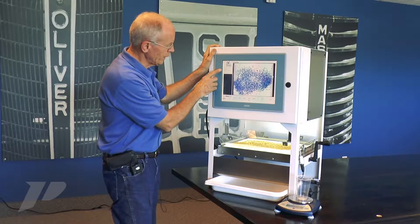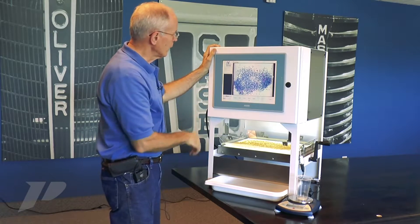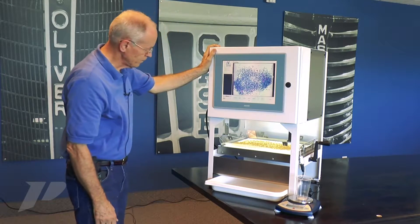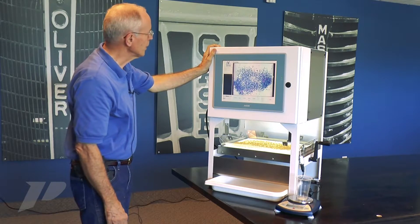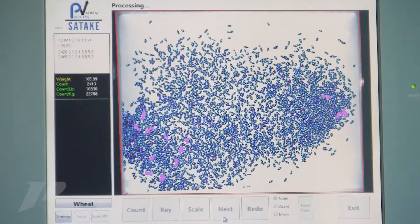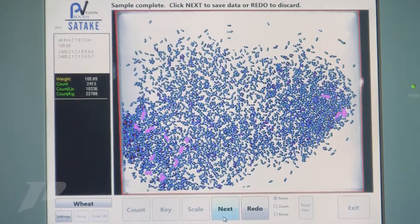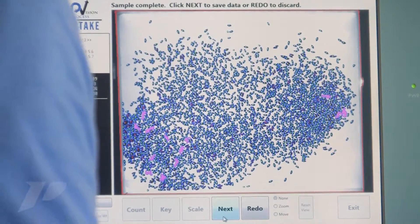We'll show you the count that we had, and we'll vibrate and count again, and the second count is within 15 kernels for a 2400 kernel count.